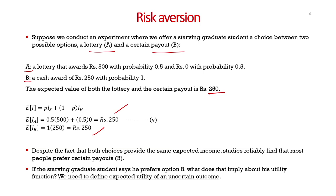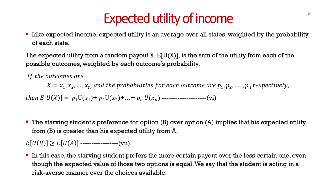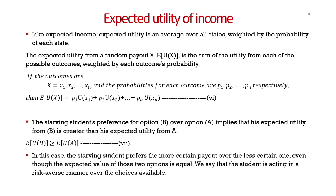If the starving graduate student prefers option B, this implies that the individual faces a concave income utility function and is therefore risk averse. We need to define expected utility of an uncertain income — we cannot just be concerned about the utility derived from expected income; we need to estimate the expected utility from uncertain income. Like expected income, expected utility is an average over all states weighted by the probability of each state: E[U(x)] = p1·U(x1) + p2·U(x2) + ...